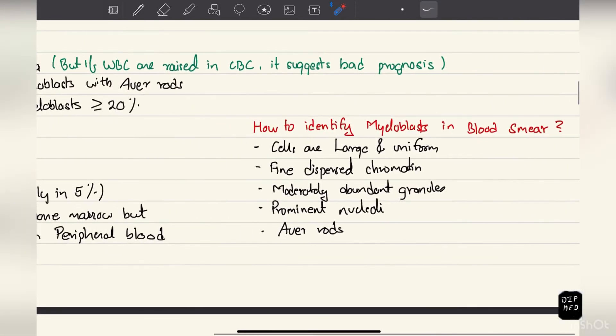How to identify myeloblasts in blood smear: these cells are large and uniform, they have finely dispersed chromatin and moderately abundant granules, they have prominent nuclei with Auer rods.